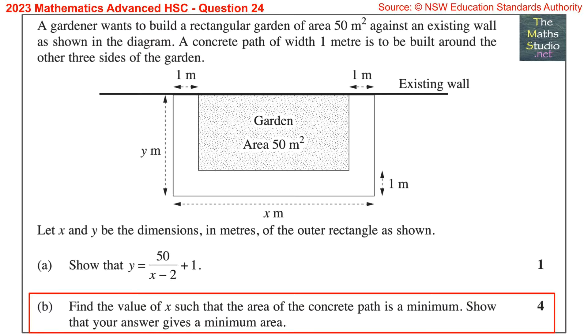Part B. Find the value of x such that the area of the concrete path is a minimum. Show that your answer gives a minimum area.